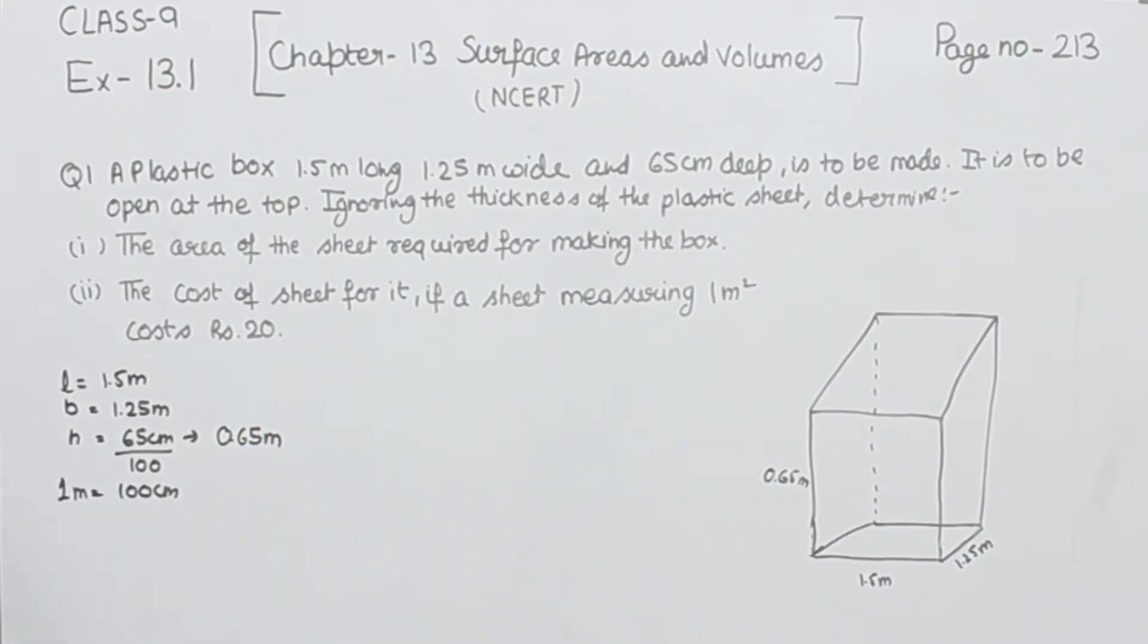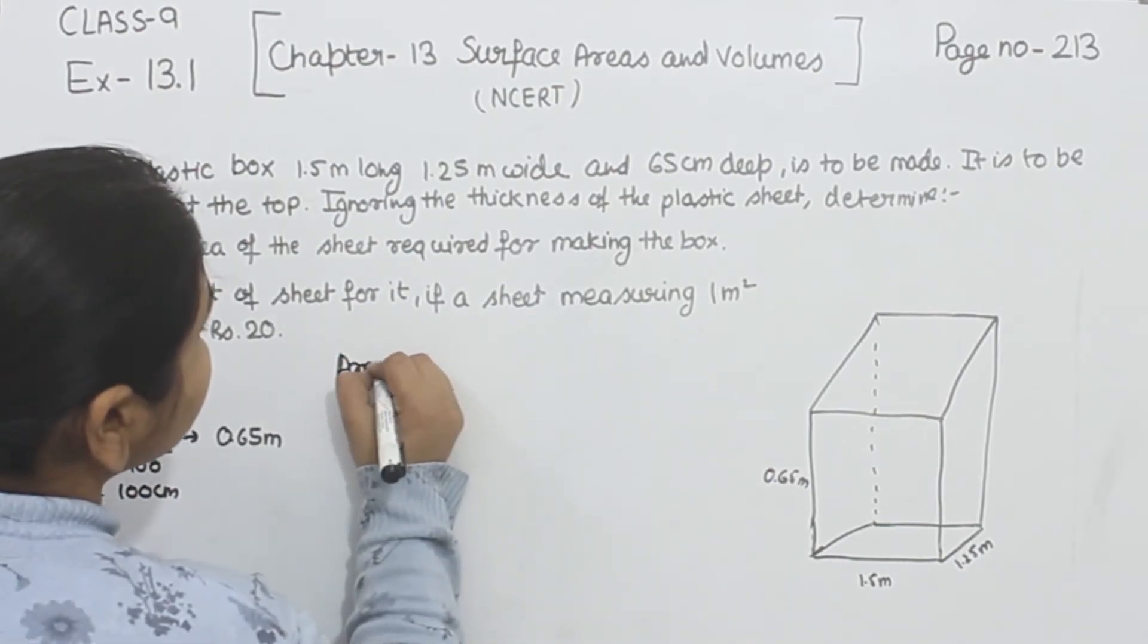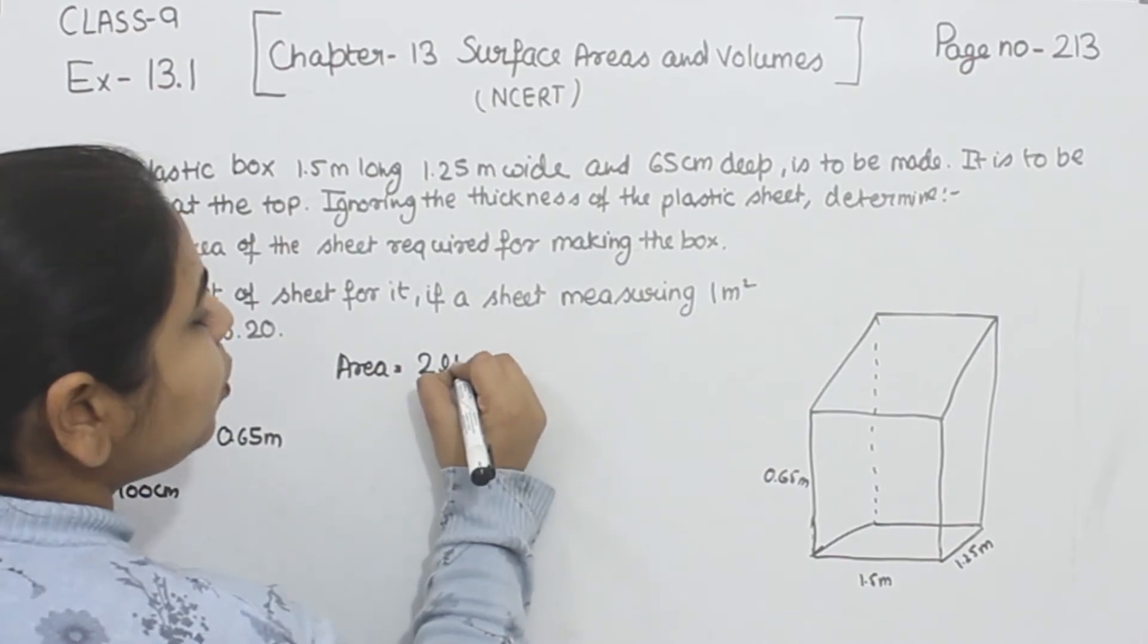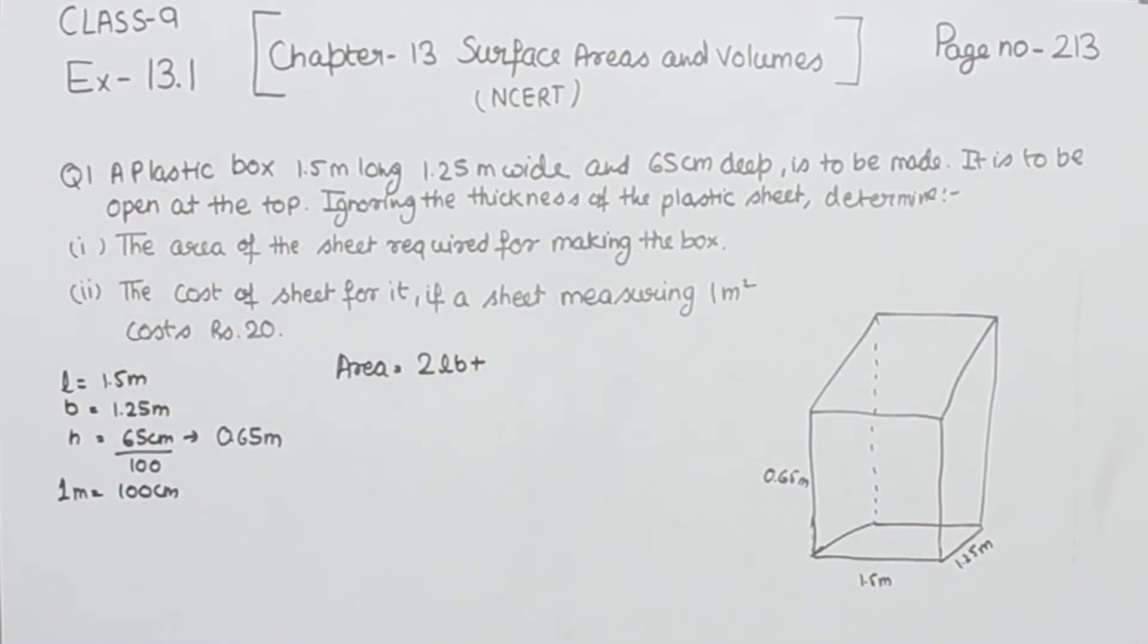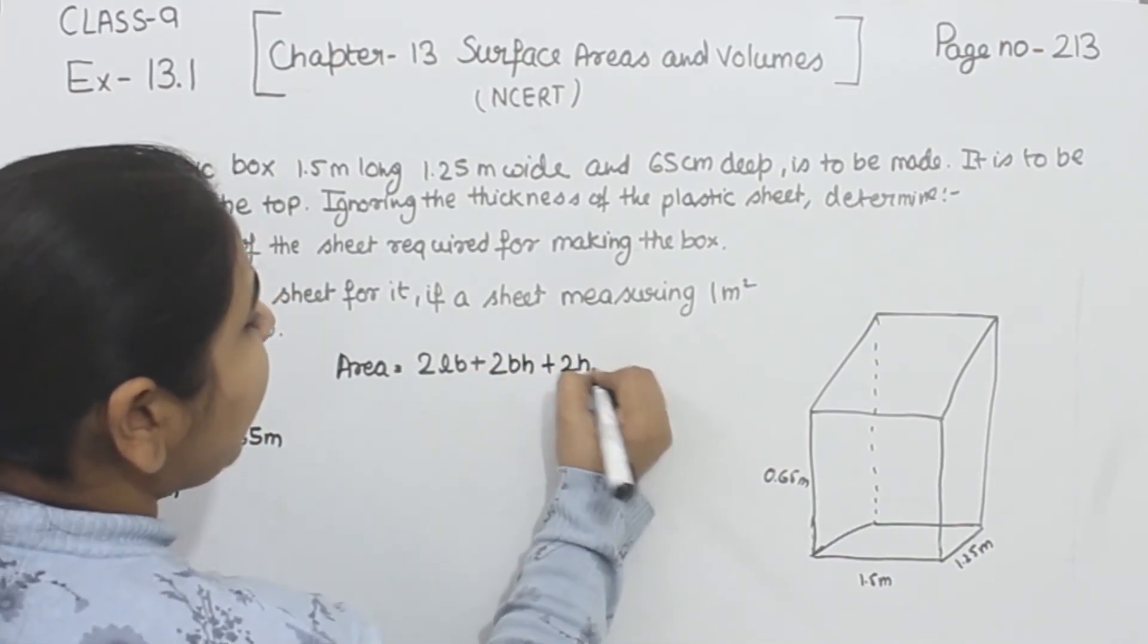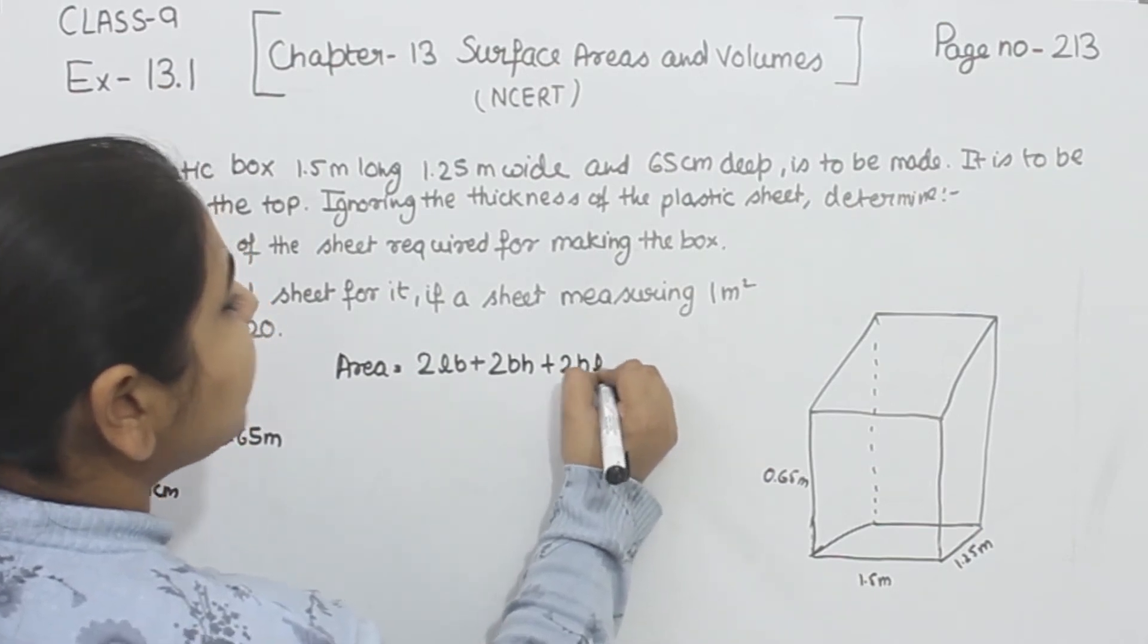Now we will find the area. The formula for area is 2 times length times breadth plus 2 times breadth times height plus 2 times height times length.